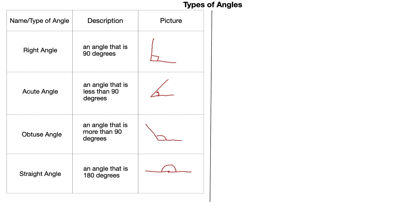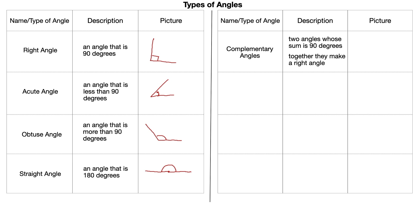In addition to those, there are pairs of angles. The first is complementary angles — two angles whose sum is 90 degrees; together they make a right angle. So if a right angle is cut into two pieces, angle one and angle two are complementary. If angle one equals 80 degrees, then 90 minus 80 tells you angle two must be 10 degrees.